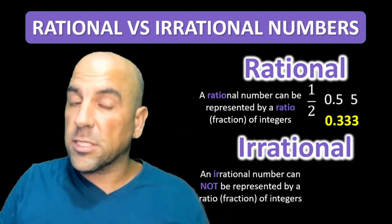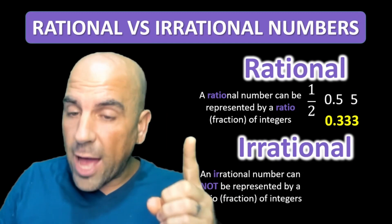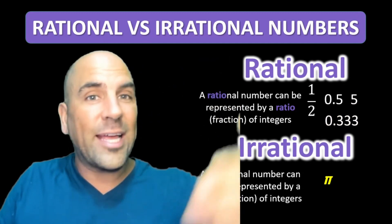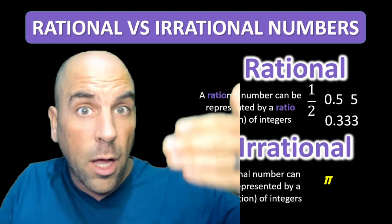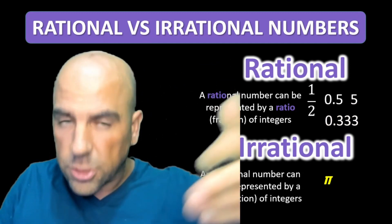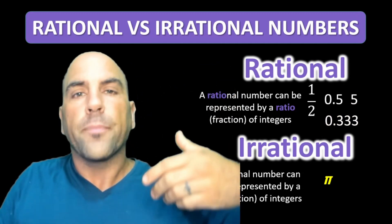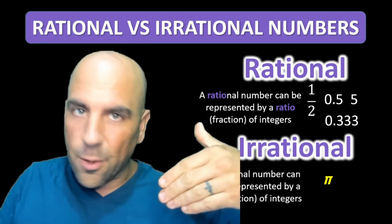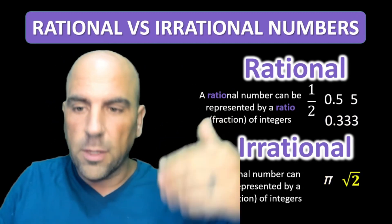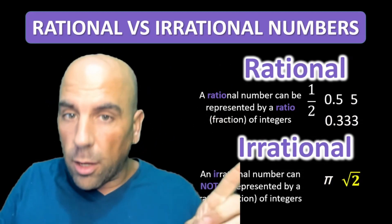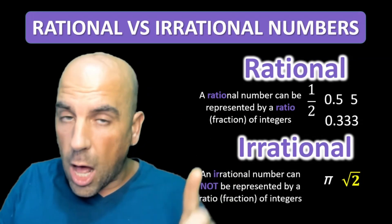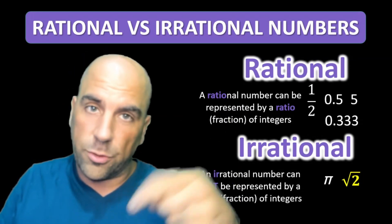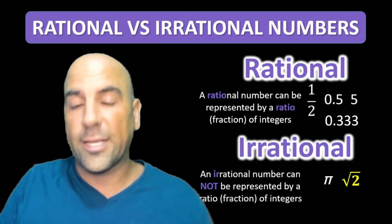Some examples of irrational numbers: Pi — it's 3.14 and it keeps going on and on. It doesn't end; it's non-terminating. But the numbers do not repeat. Square root of two — it's also non-terminating and the numbers do not repeat when you turn it into a decimal.